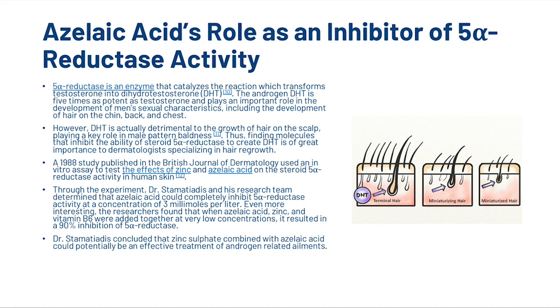Let's have a look at Azelaic Acid's role as a 5-alpha reductase inhibitor. 5-alpha reductase is an enzyme that catalyzes the reaction which transforms testosterone into dihydrotestosterone. The androgen DHT is five times as potent as testosterone and plays an important role in the development of men's sexual characteristics, including the development of hair on the chin, back and chest. However, DHT is actually detrimental to the growth of hair on the scalp, playing a key role in male pattern baldness. Thus finding molecules that inhibit the ability of steroid 5-alpha reductase to create DHT is of great importance to dermatologists specialising in hair regrowth.